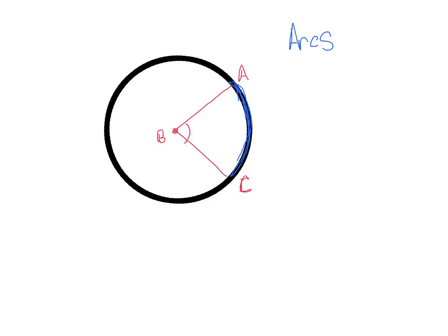Alright so we have in blue, outlined in blue, we have a minor arc. We know it's a minor arc because it is less than 180 degrees in measure. It's the shorter arc or the smaller arc of the two.